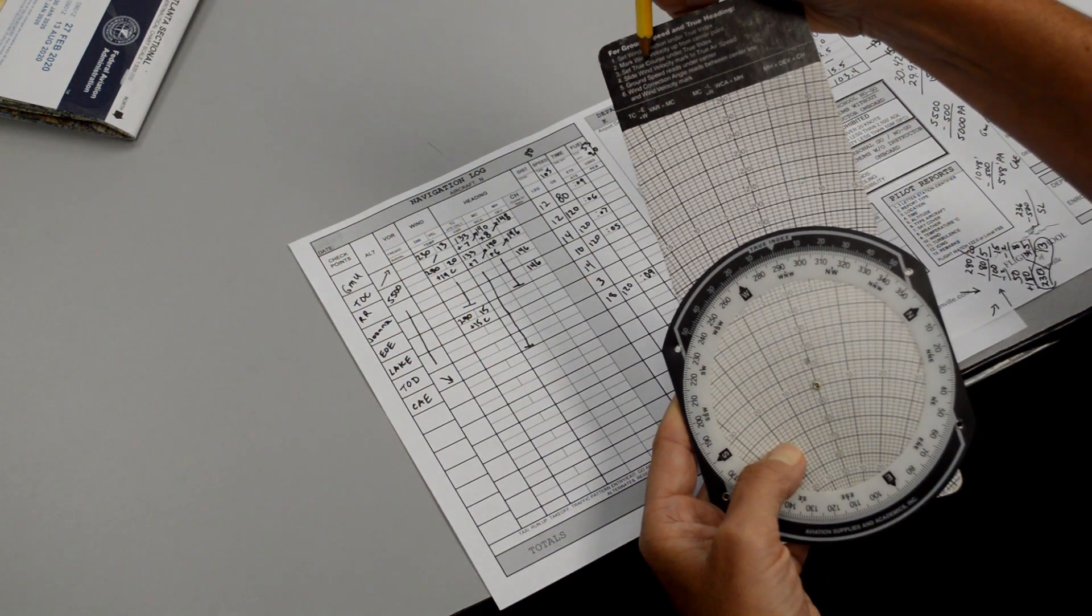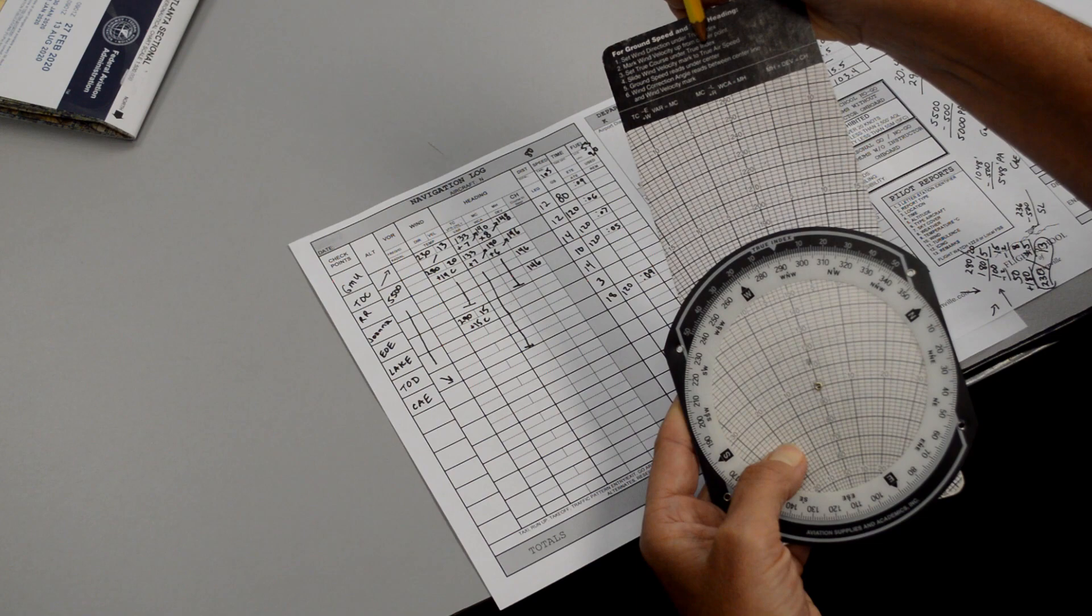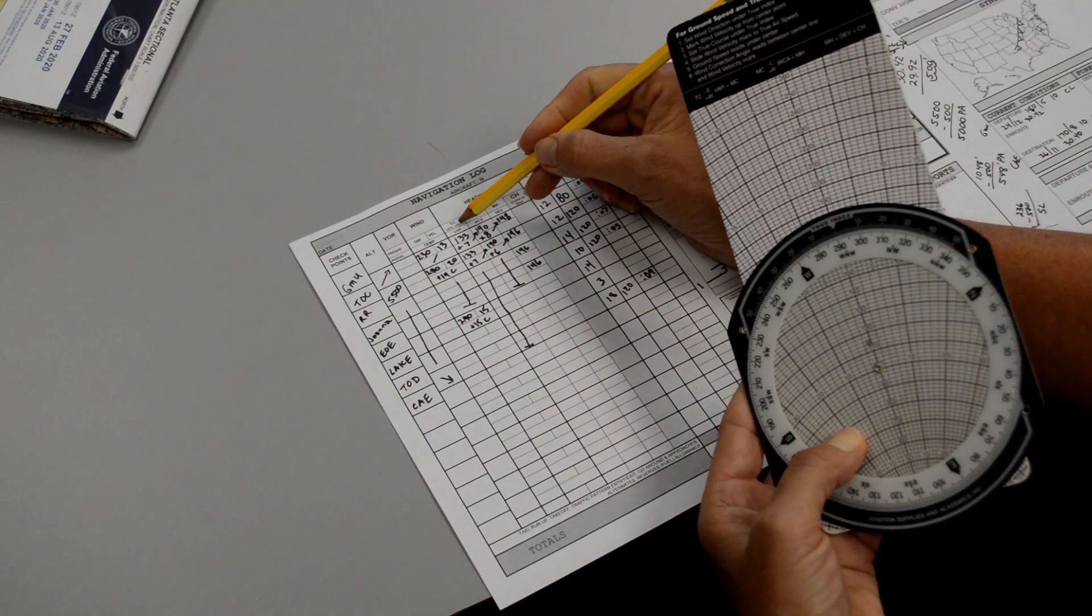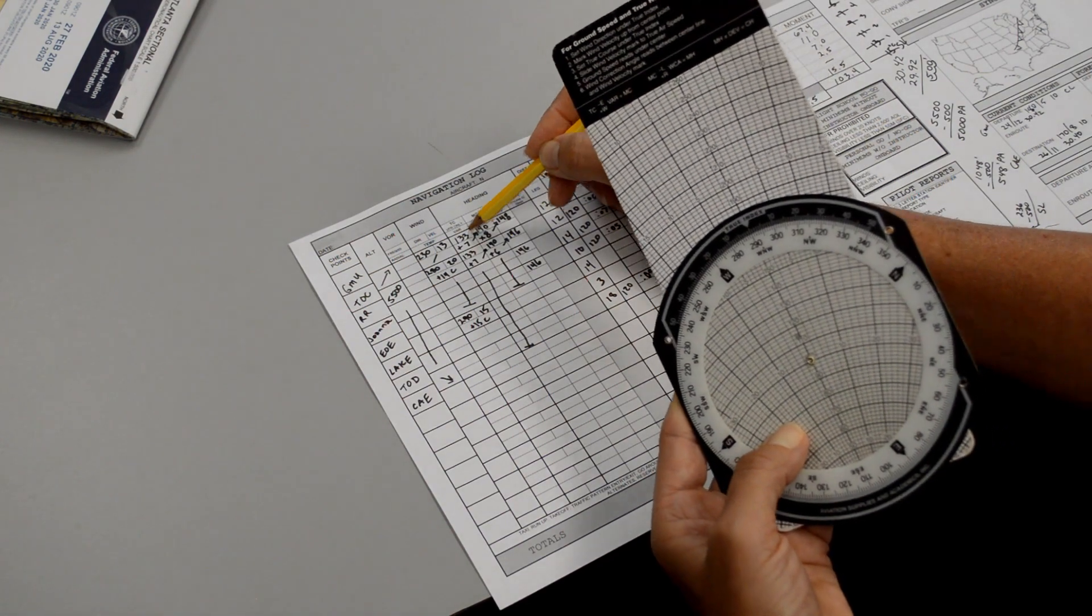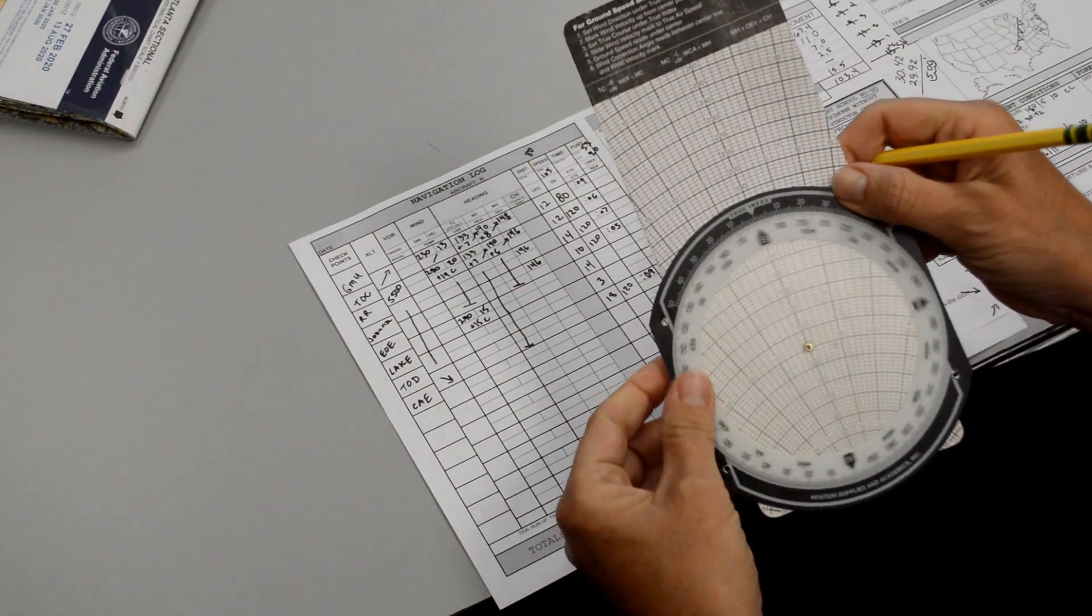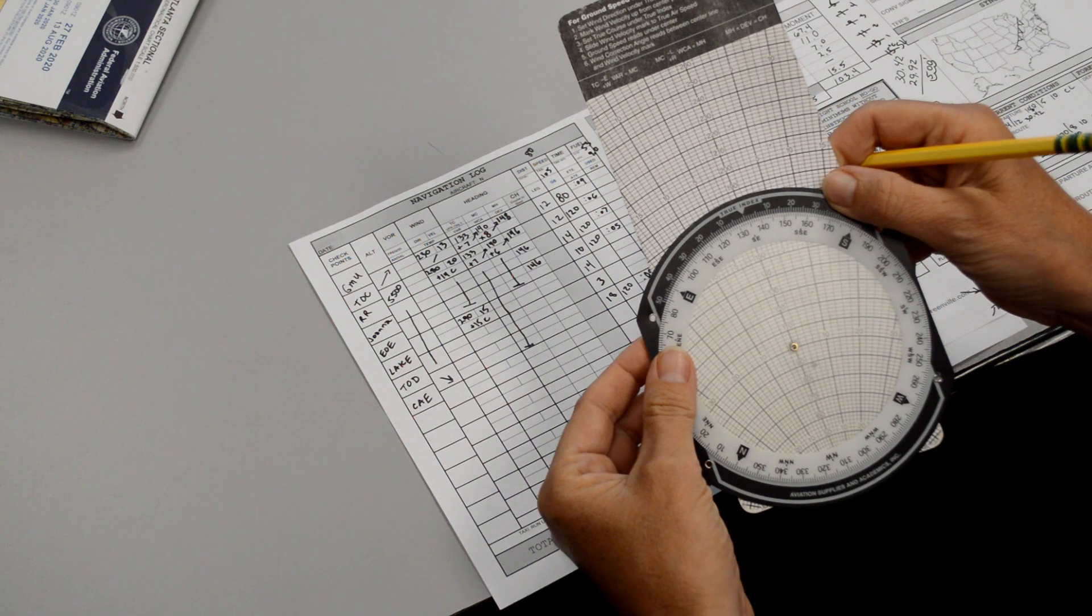Number 3 says set true course under true index. The true course we already wrote down here. We got that by using our plotter in the very beginning of this process. So we spin this around to 133 for a true course.